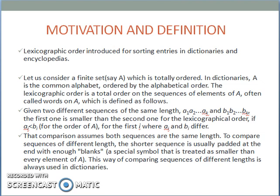Let us consider a finite set, say A, which is totally ordered. In dictionaries, A is the common alphabet ordered by alphabetical order. The lexicographic order is a total order on the sequences of elements of A, often called words on A. If two different words of the same length, say A1, A2, AK and B1, B2, BK, are compared, and AI is less than BI, then A1, A2, AK comes before B1, B2, BK in the dictionary.